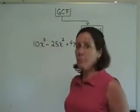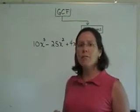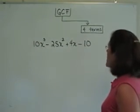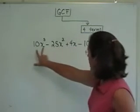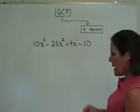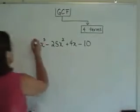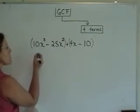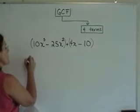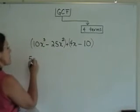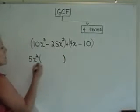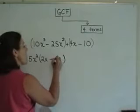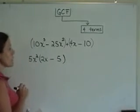Another problem with four terms. My broken record goes on and asks you every time to look for the greatest common factor first. In these four terms, there is no numerical value that divides into everyone evenly, nor is there an x term in everyone. Therefore, this problem has four terms and I should factor by grouping. I'll group the first two and the second two. Between 10 and 25, the numerical common factor is 5. x occurs in both, and I can take at most x squared out. I'll need a 2x so that 5x squared times 2x gives 10x cubed, and a minus 5 so that 5x squared times minus 5 gives minus 25x squared.